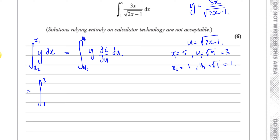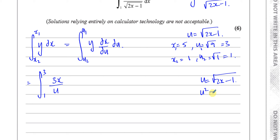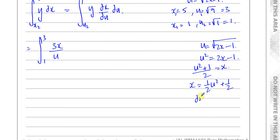Y is 3x over the square root of 2x minus 1, and u is the square root of 2x minus 1, so I can write y as 3x over u. Now I need dx/du. Starting from u equals the square root of 2x minus 1, squaring both sides gives u squared equals 2x minus 1, so x equals (u squared plus 1) divided by 2. Differentiating, dx/du equals u. The u's cancel out nicely.